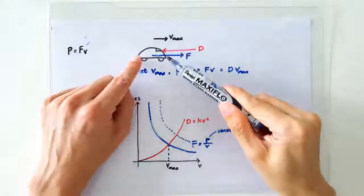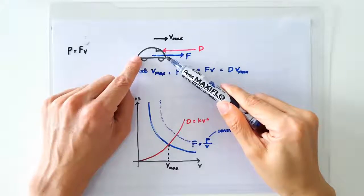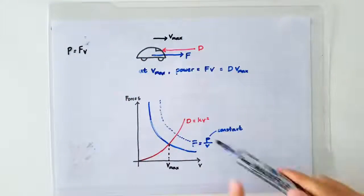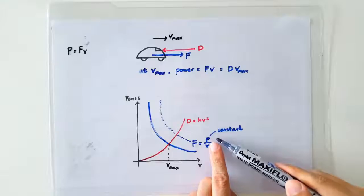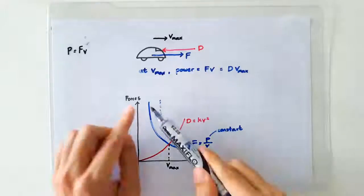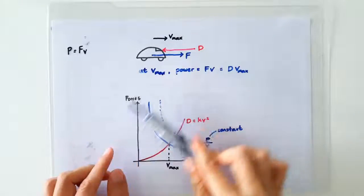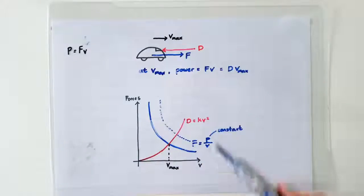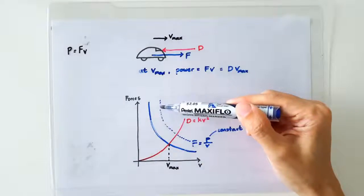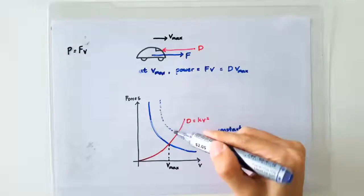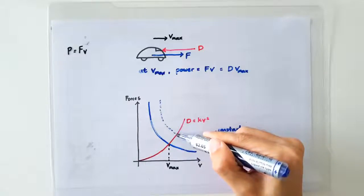If you want to increase the maximum speed of the car, you can use a larger engine which supplies power at a higher rate, so the entire FV graph will shift this way. So the engine will be able to deliver a larger forward thrust at every speed, so you are going to get a higher maximum speed.